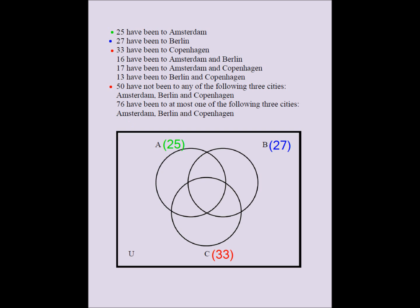50 have not been to any of the three cities — Amsterdam, Berlin, or Copenhagen — so 50 clearly goes in the region outside all three circles. So we have filled in one of the eight regions. We are supposed to fill in all eight.